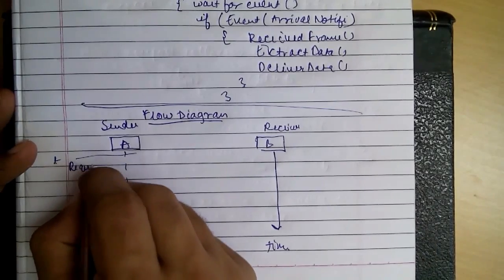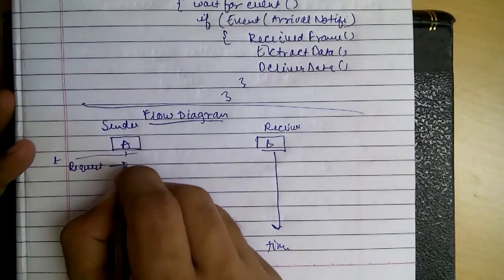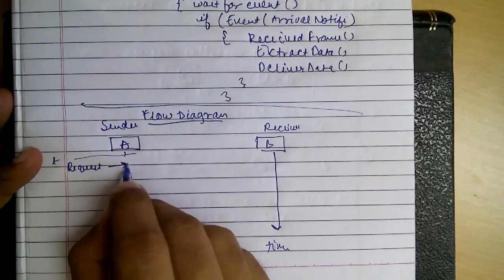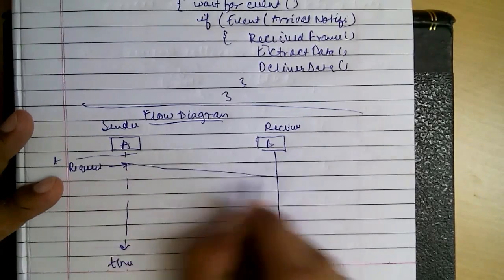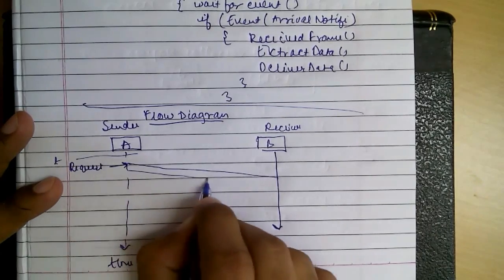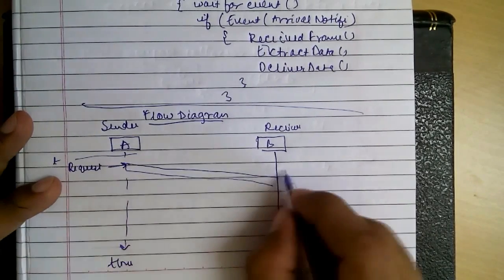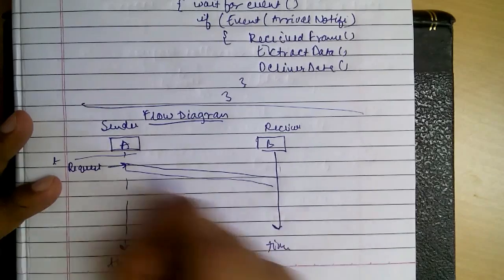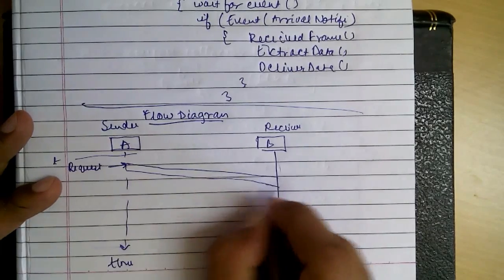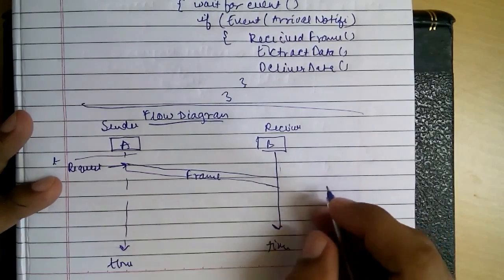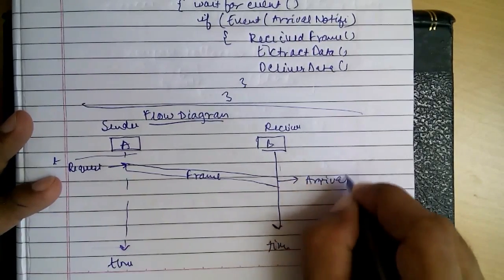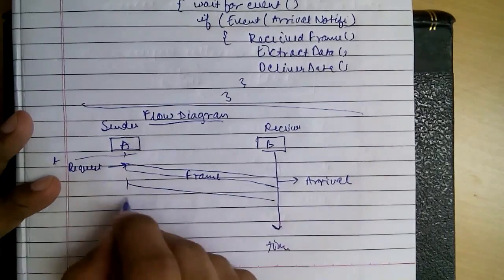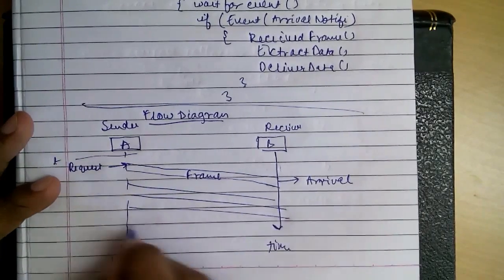So, let's say the request is here. Then the frame is created. And it will go and take some time. This is the time taken. That's why a downward slope. So this frame will take time and it will be arriving here. So, like this there will be other frames.